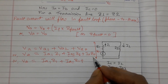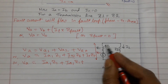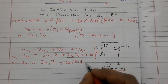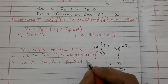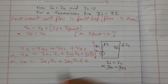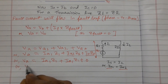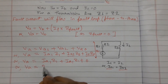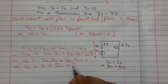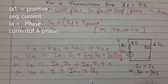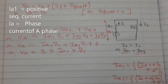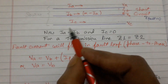In a line-to-line fault, the zero sequence current Ia0 is zero, so that term drops out. Therefore we can write Va equals 2·Ia1·Z1. Now we will substitute the value of Ia1 in terms of Ia, where Ia is the actual fault current flowing in the circuit.